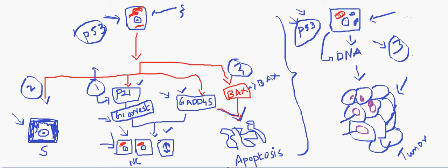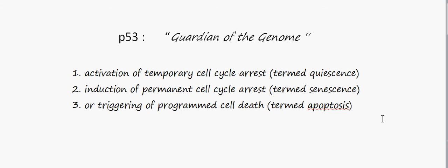Whenever there is a homozygous loss of the p53 gene, DNA damage occurs and there is no repair mechanism — it is unrepaired, mutations accumulate, and the cells undergo a one-way street leading to malignant transformation, with intense growth of the cell visible here.